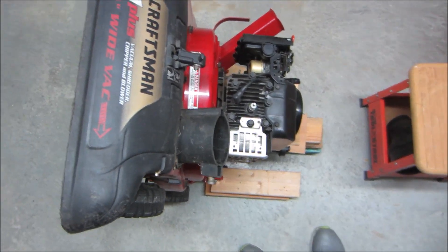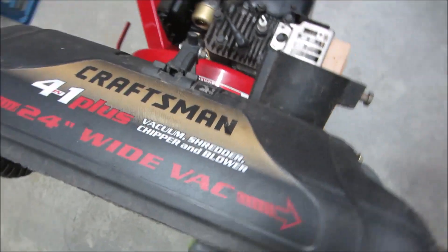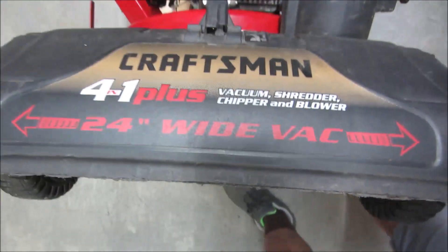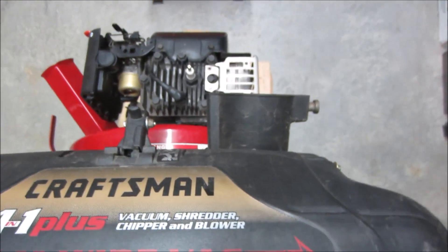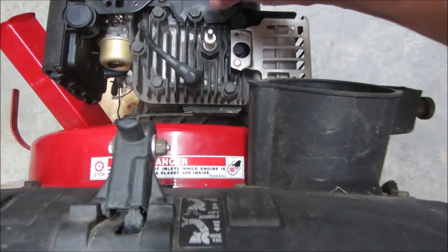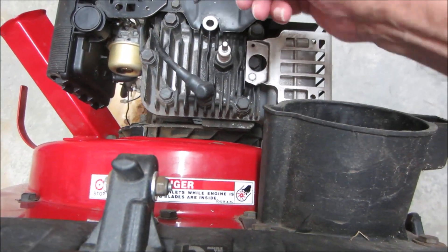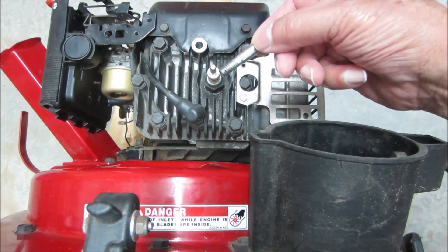So I brought home this nice Craftsman 4-in-1 line vac from the store the other day and among other things that I found wrong with it is it has a snapped cylinder head bolt.